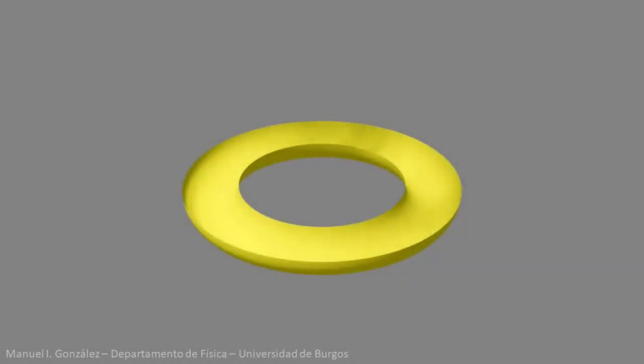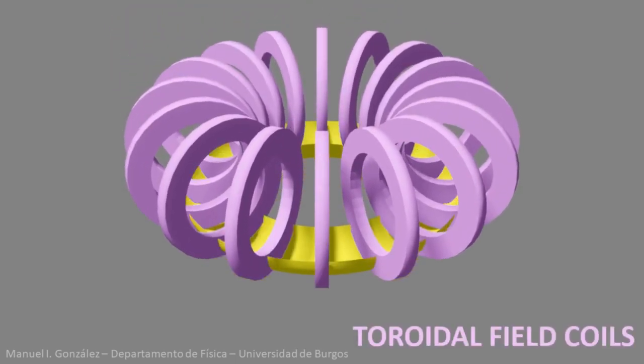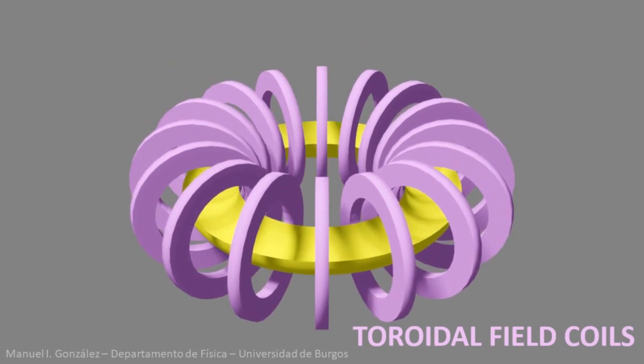Several groups of coils surround the tokamak. These are the so-called toroidal field coils. Their superconducting windings must carry a huge current in this direction, up to a few tens of kA. The toroidal coils generate an extremely intense magnetic field inside the chamber. The magnetic field lines look like this.